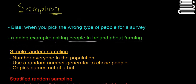If you just ask people in Dublin about farming, you're going to get a different result than if you ask one person from every county in the country, just as an example. So you want to eliminate bias. There are a couple of different ways that statisticians have come up with to eliminate bias. You need to know each of these different types of sampling, which determines how you choose people for your survey.